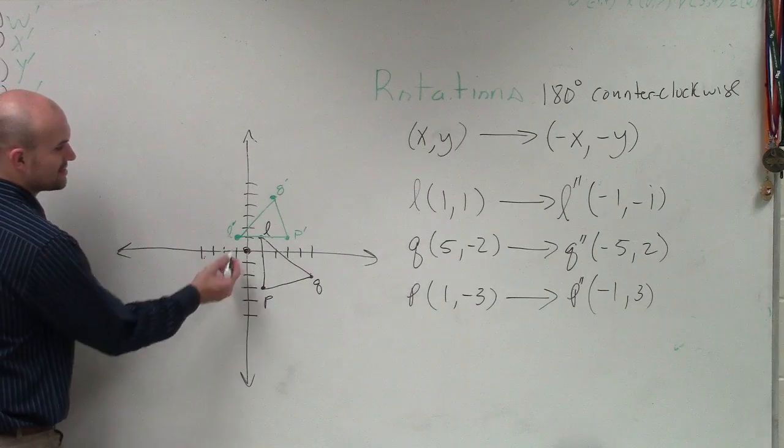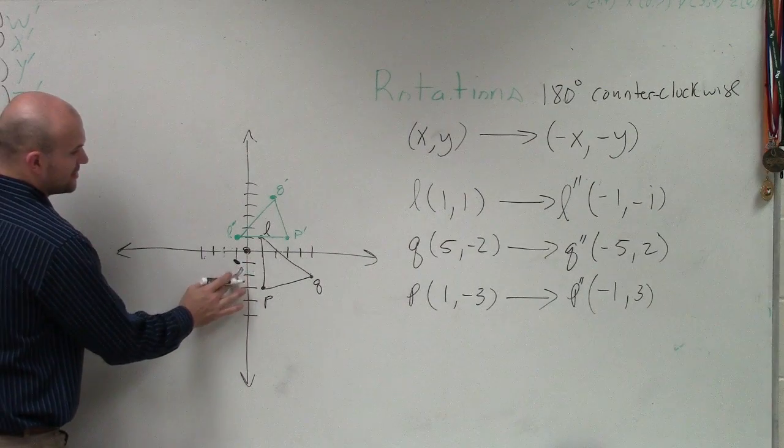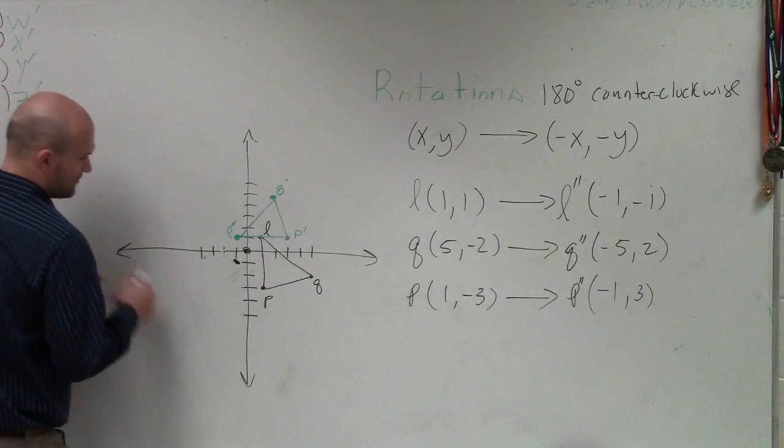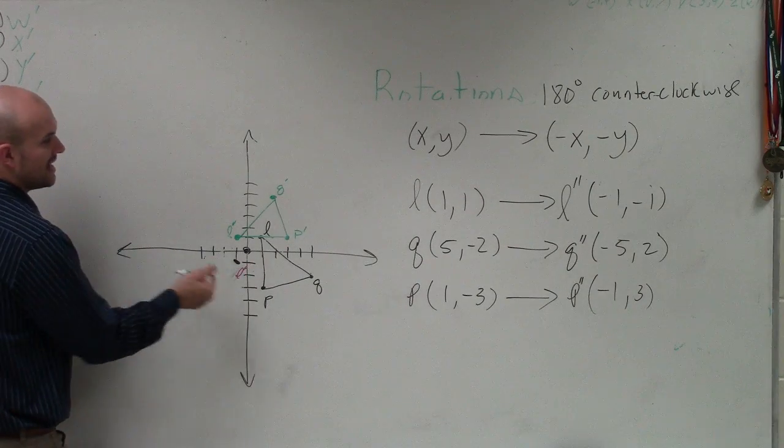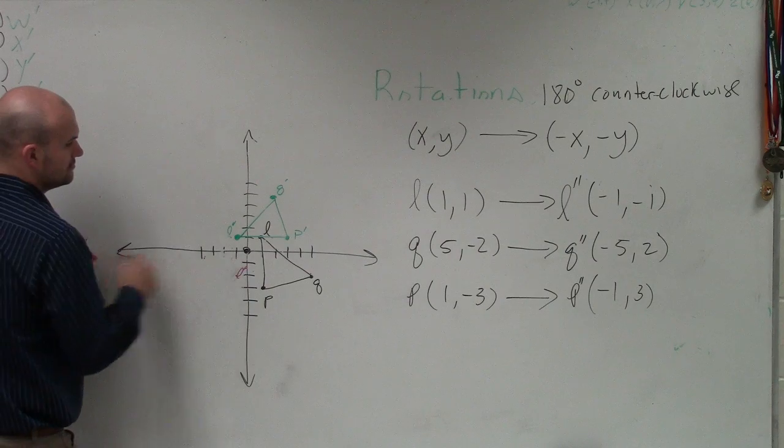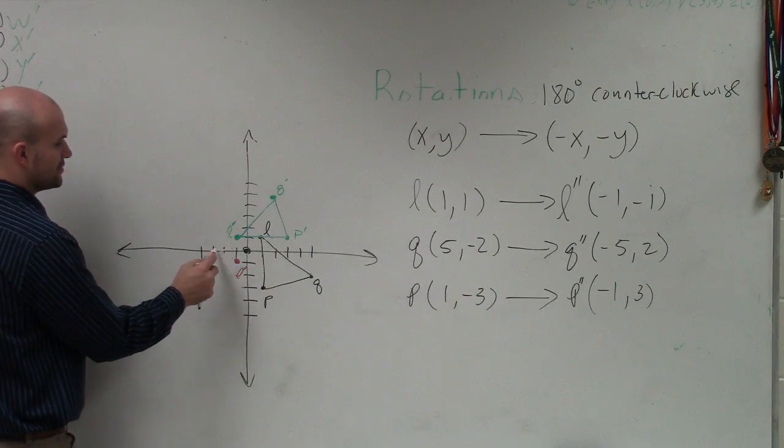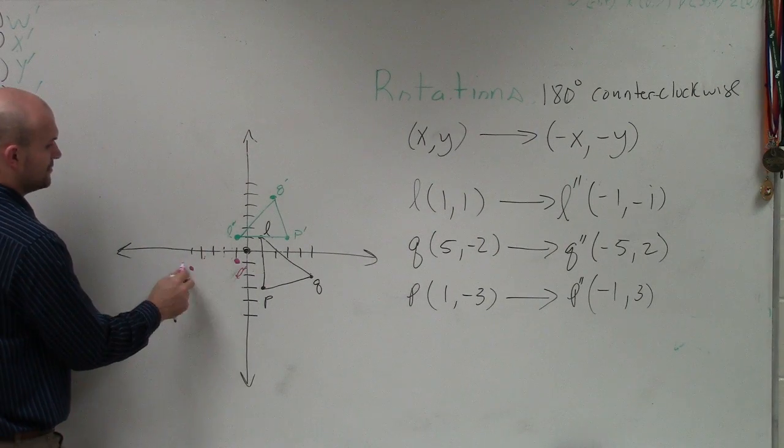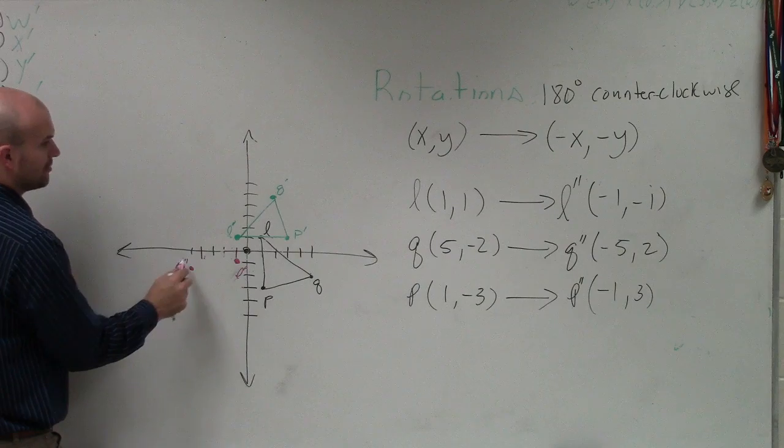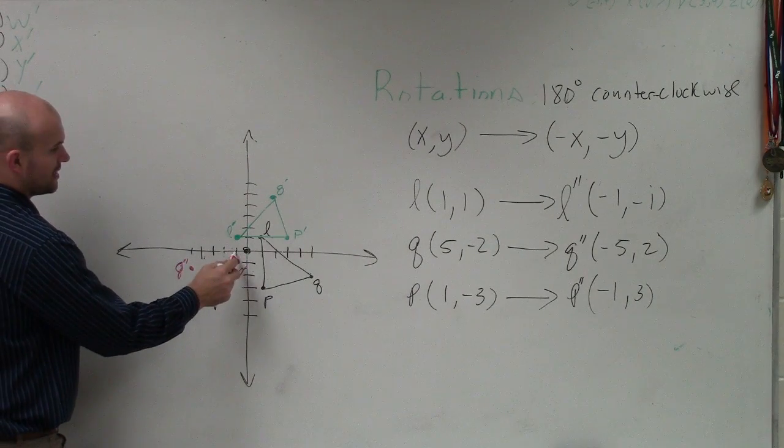So let's go and plot these points. So it's negative 1, negative 1, so that's L. Oh wait, let me do this in pink. L double prime. Then I have Q which is negative 5, 1, 2, 3, 4, 5, negative 2, so that's Q double prime. And then negative 1, 3, negative 1 up 3.